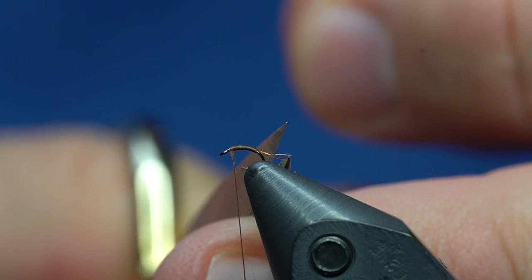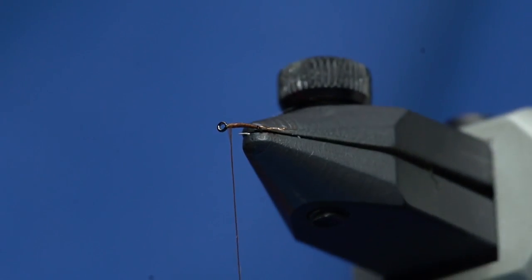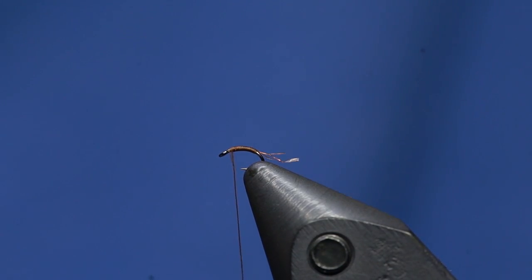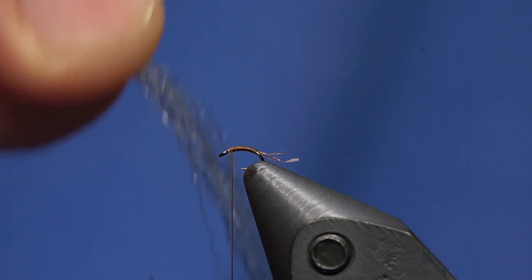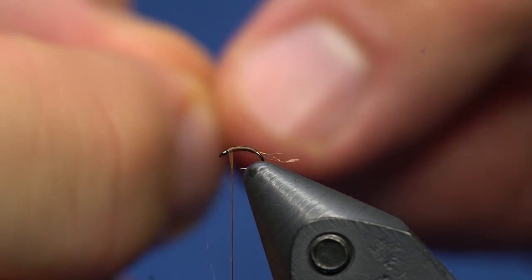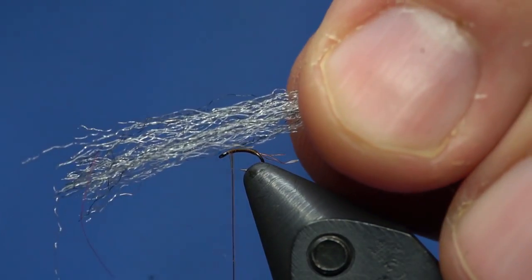As you can see, it's just a really tiny amount of fibers coming off there. For the wing, instead of using snowshoe rabbit foot which I used to use a lot, I've switched over to EP trigger point fiber. This is the quick silver color, a really cool mottled gray.